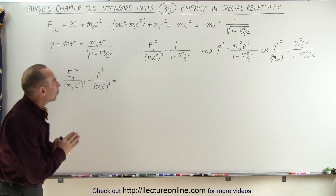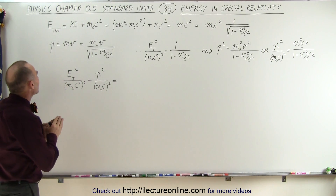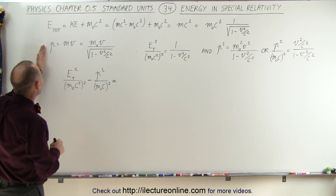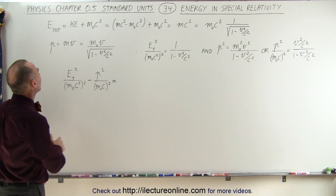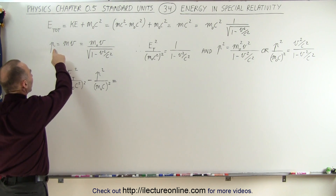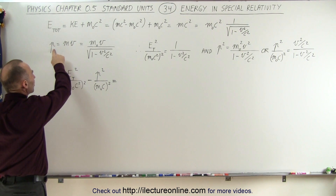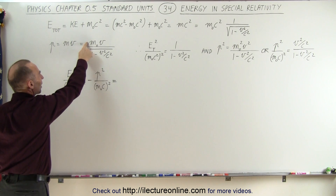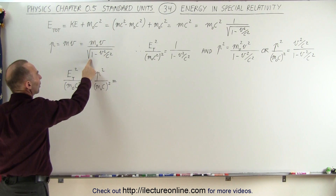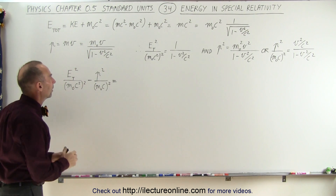We can also write the momentum in terms of the mass times velocity. Since this is the relativistic momentum, this is the relativistic mass, which means it's the rest mass divided by the square root of 1 minus v squared over c squared.